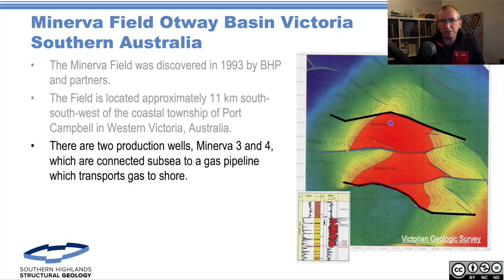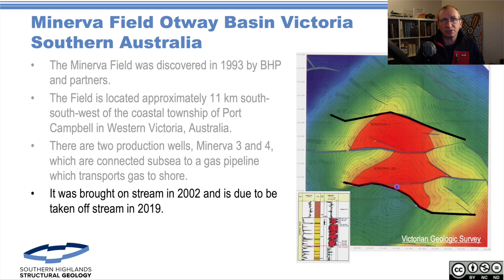There are two producing wells — the initial discovery here and here — and then they put production wells up on the crests and tied it back to onshore. It came onstream in 2002 and was taken off stream just last year in 2019.